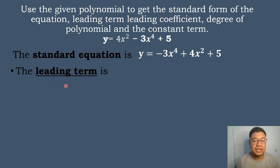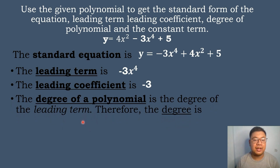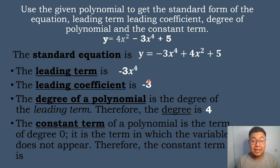The leading term is the term with the highest degree, which is negative 3x to the fourth power. The leading coefficient is the number beside the variable of the leading term, which is negative 3. The degree of the polynomial is the exponent of the leading term, which is 4. The constant term is the term without a variable, which is 5.